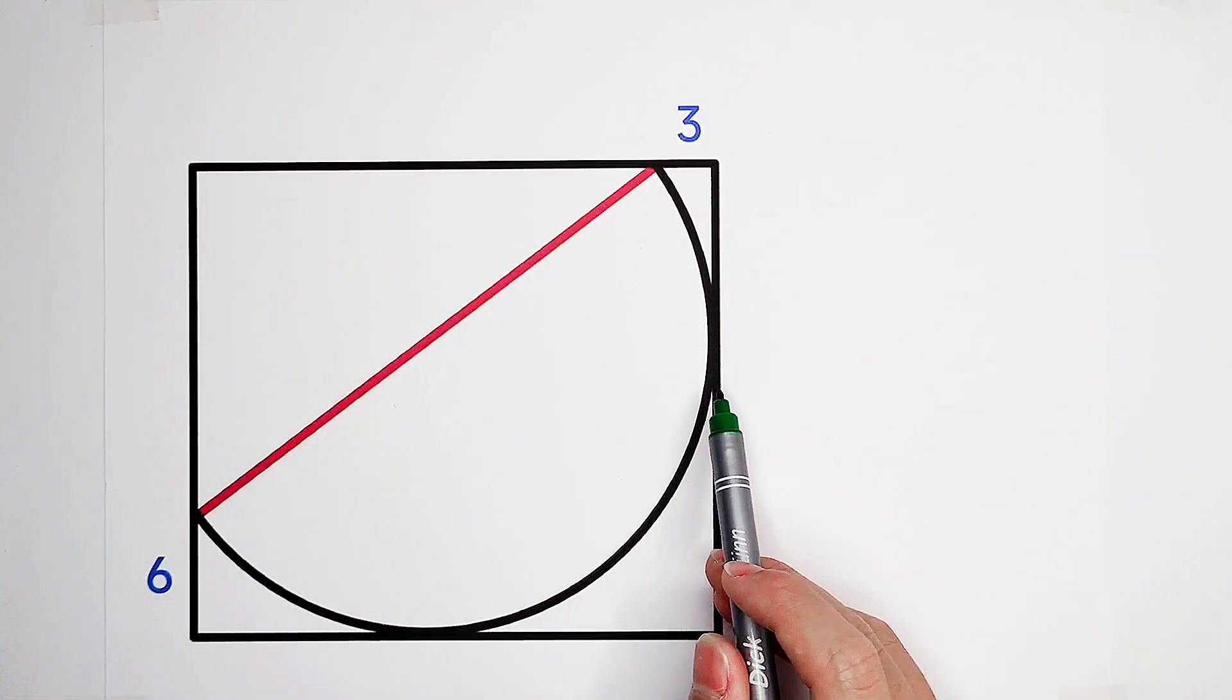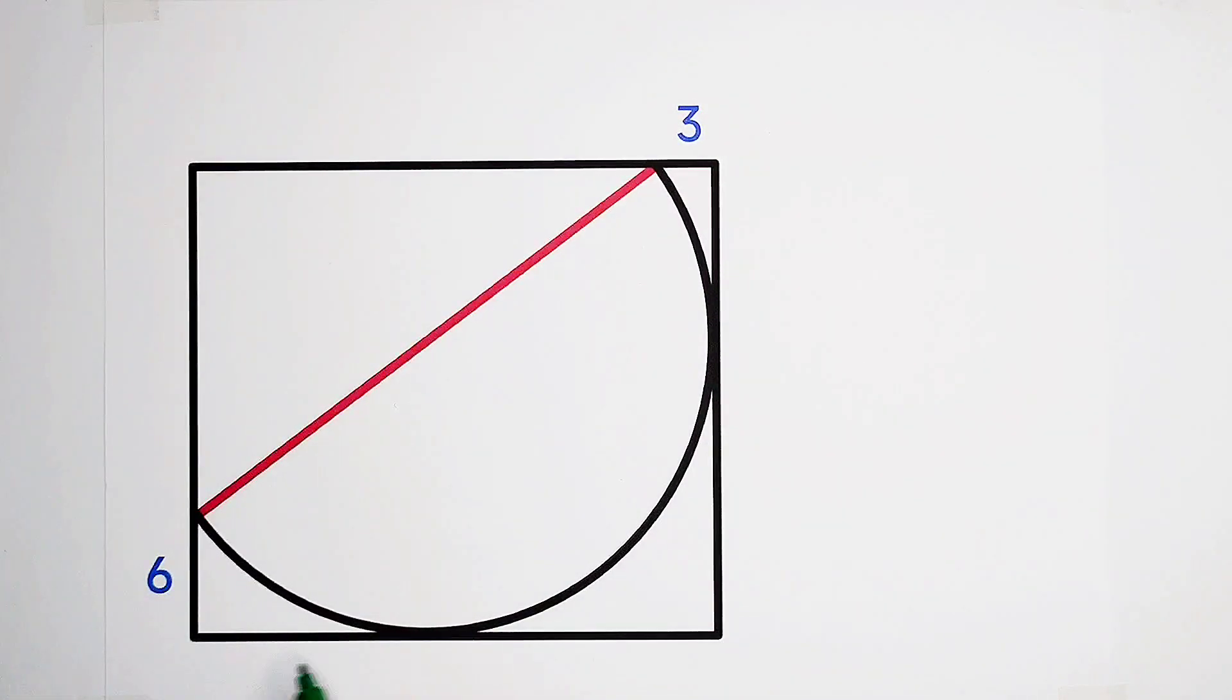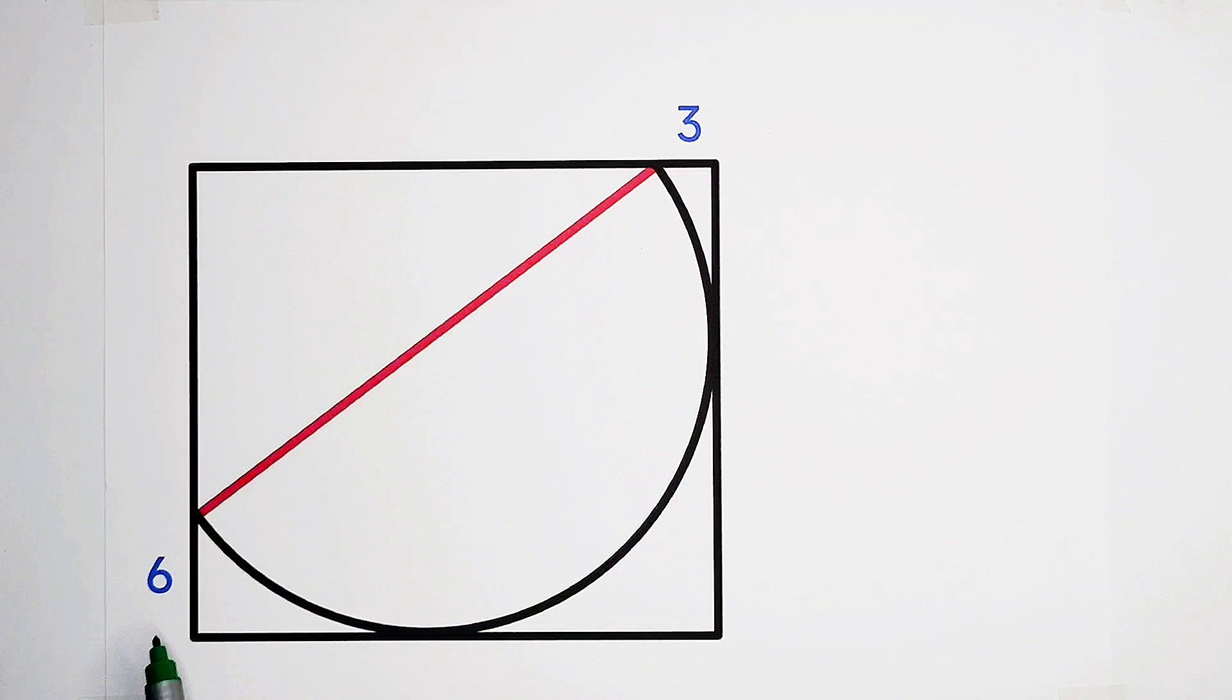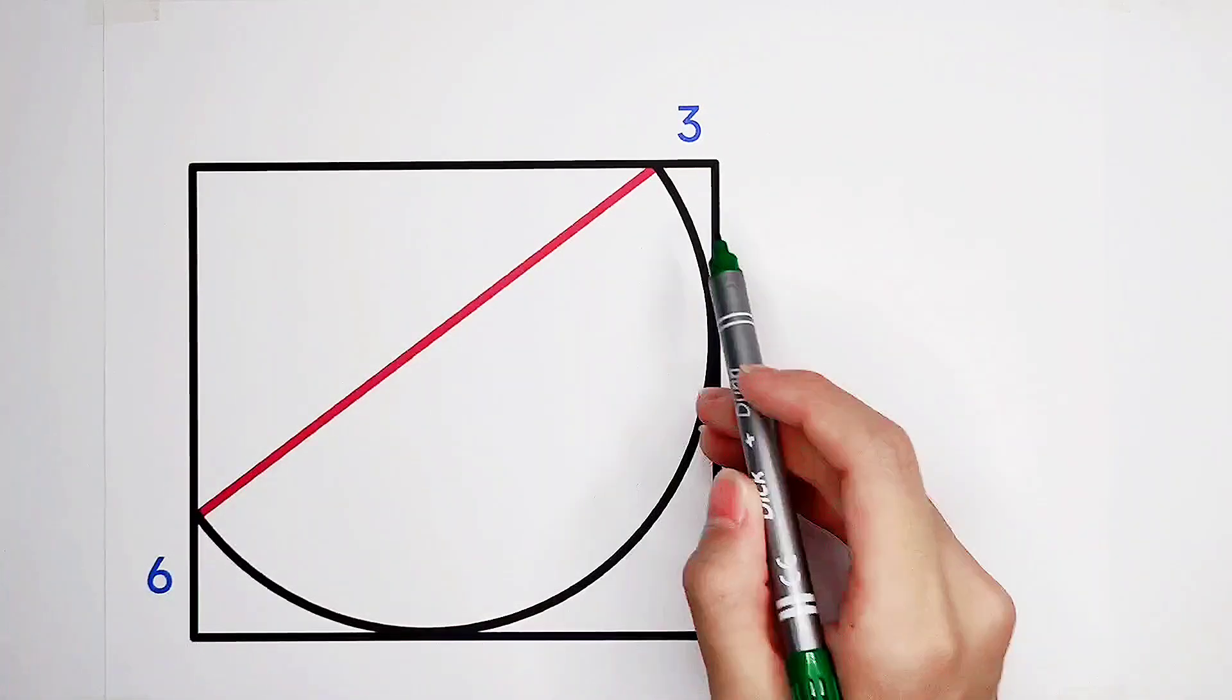Here is a semicircle. It is tangent to the adjacent sides of this rectangle. This piece is 3. This piece measures 6. The question is, how long is the diameter of this semicircle?